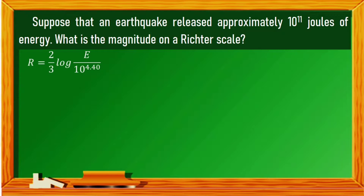Sample problem: suppose that an earthquake released approximately 10 raised to the power of 11 joules of energy. What is the magnitude on the Richter scale? We will use the formula for the magnitude r of an earthquake. Since the energy released is 10 raised to the power of 11, let us substitute this into the formula.